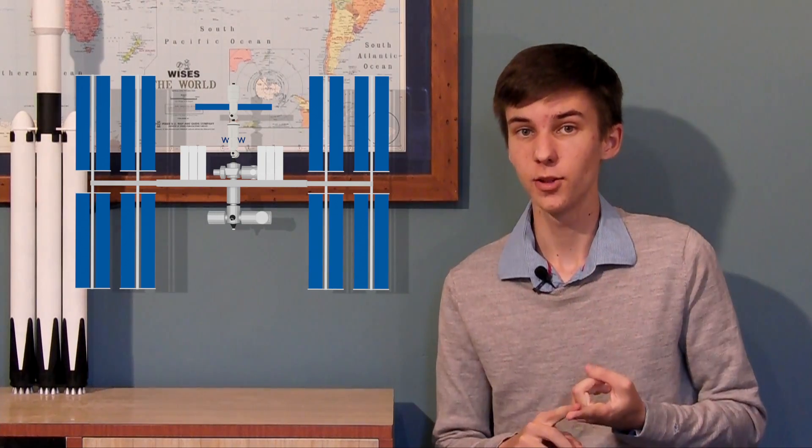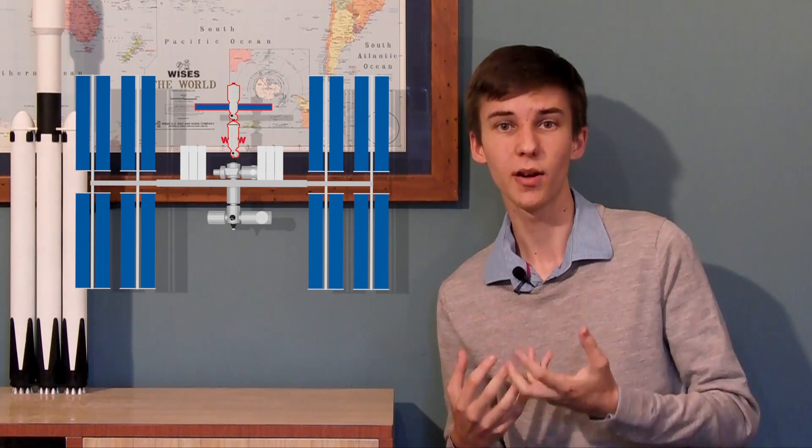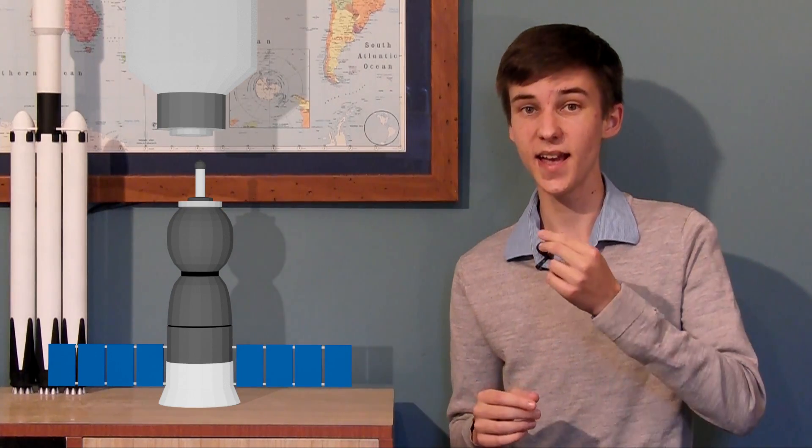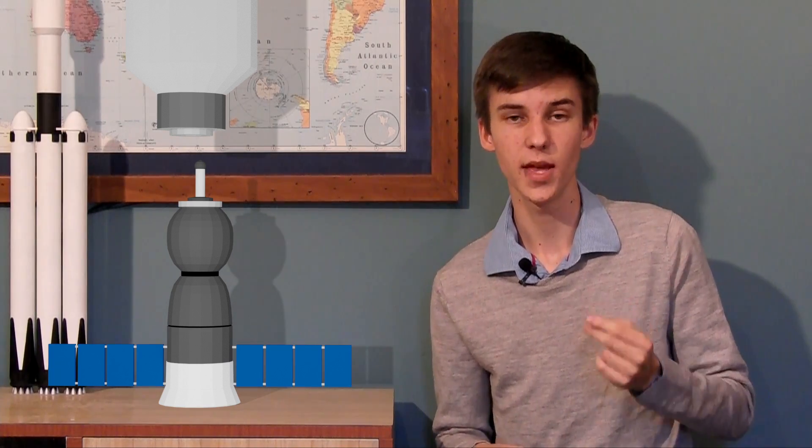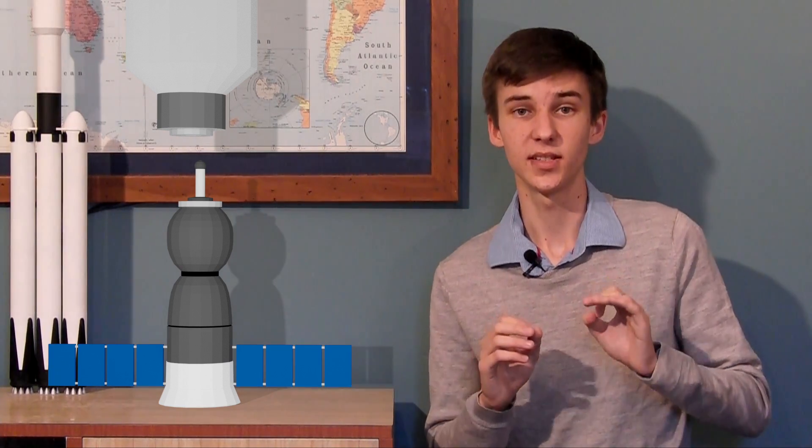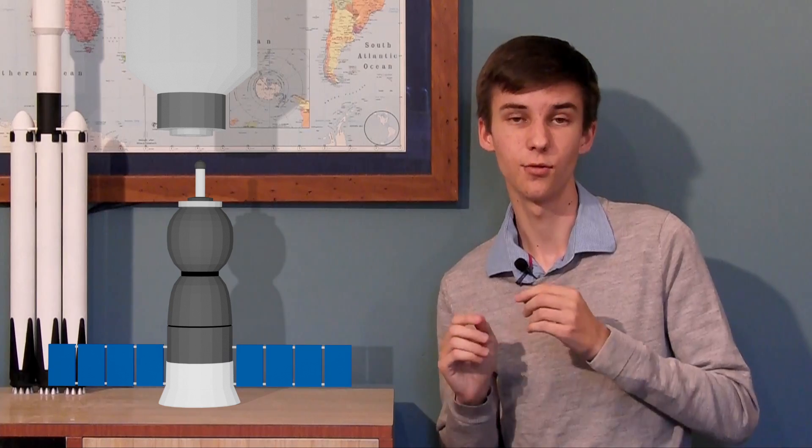So the first one that we're going to look at is a Russian one, and it's on the Russian segment of the International Space Station. There's quite a few of these docking ports, and they're used for docking the Russian Soyuz and Progress spacecraft. They are a docking port of a design called SSVP, which stands for system for docking and internal transfer.